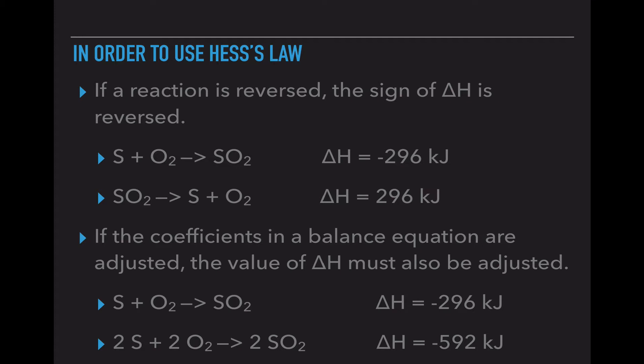So Hess's law is like a big puzzle. We are going to take individual chemical reactions to attempt to combine them in a way that either leaves us some leftovers or cancels out stuff that we don't want to include. So with that being said, there are two main ideas that we have to keep in mind. The first idea, if a reaction is reversed, the sign of the delta H is reversed.